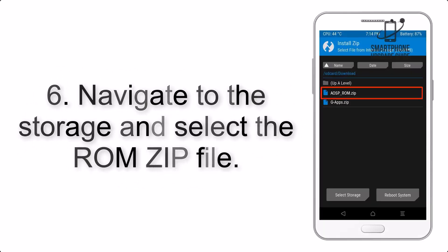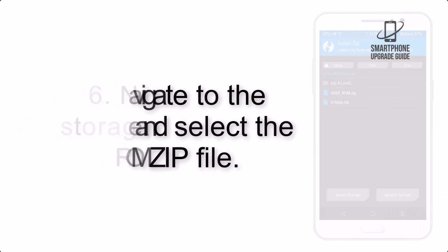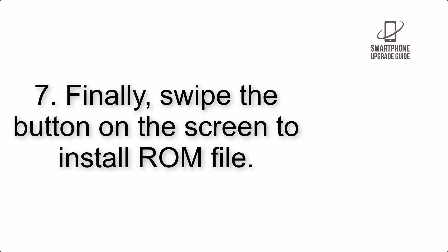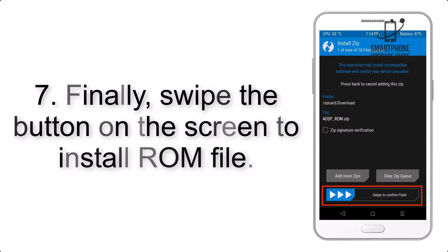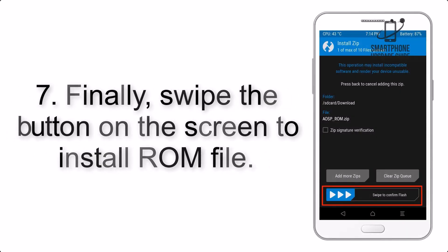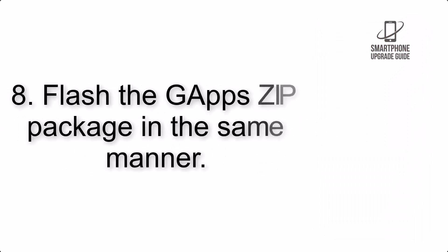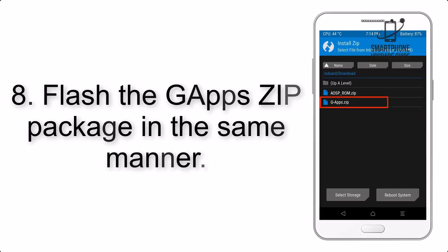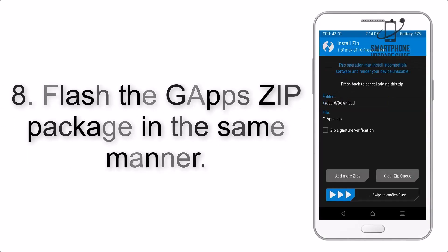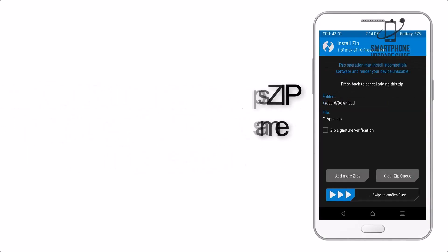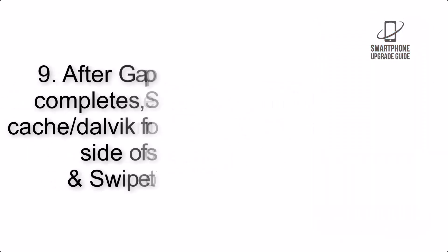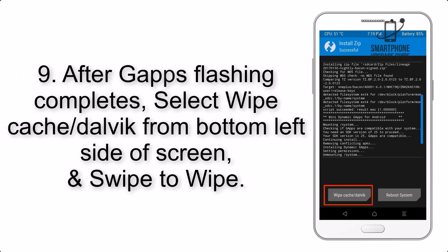Step 5: Go back to the recovery main screen and tap on the Install button. Step 6: Navigate to the storage and select the ROM zip file. Step 7: Swipe the button on the screen to install the ROM file.